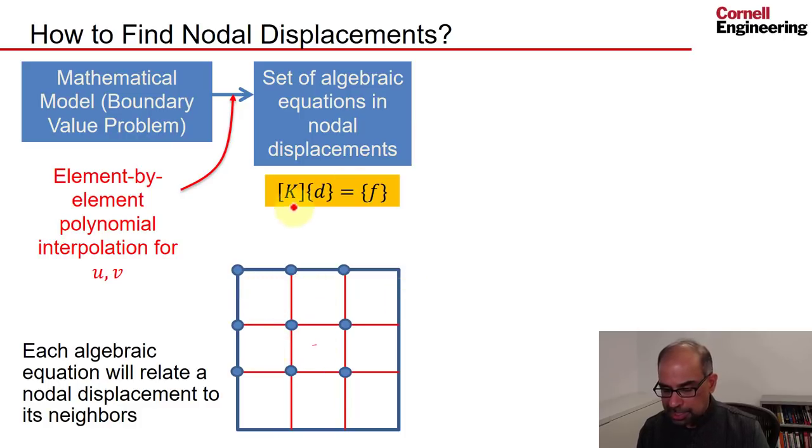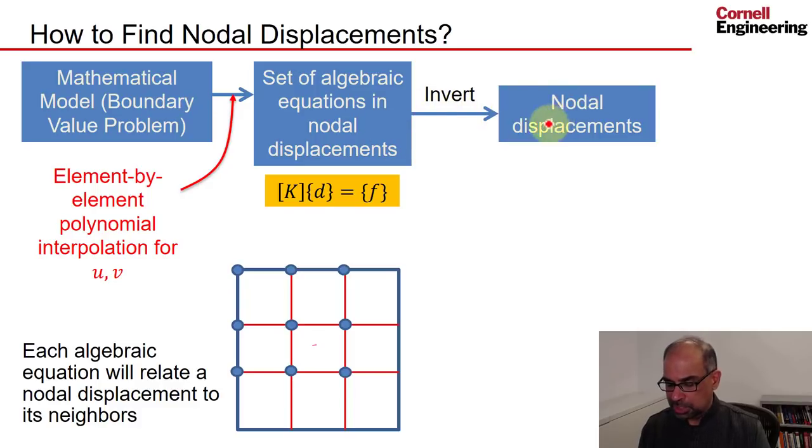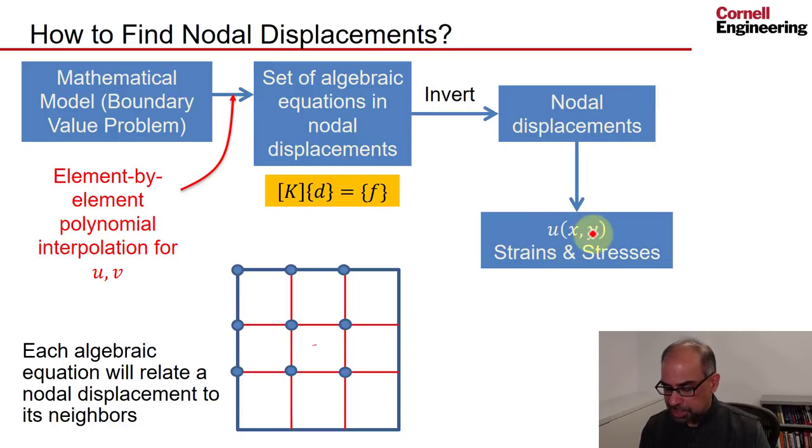Now, this set of algebraic equations is usually written as KD equal to F, where K is the stiffness matrix and it's sparse because of this property. And then ANSYS will invert the algebraic equations for us and determine the nodal displacements. And once we have the nodal displacements, everything else, such as the displacement field, the strains and the stresses, can be determined through post-processing.